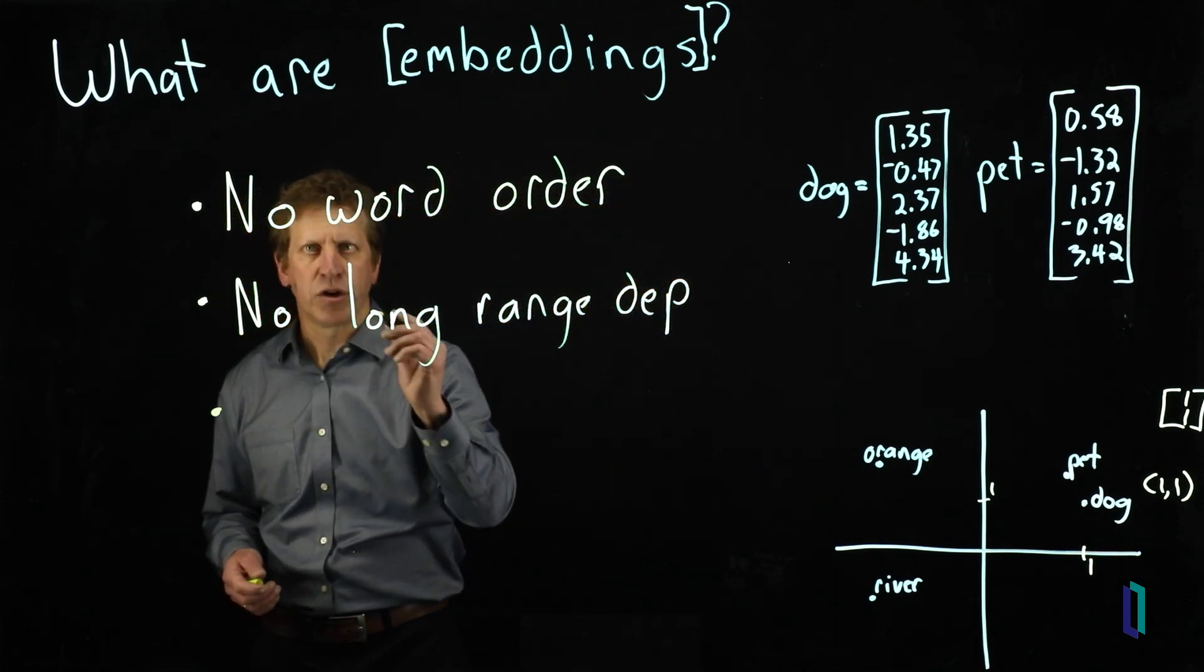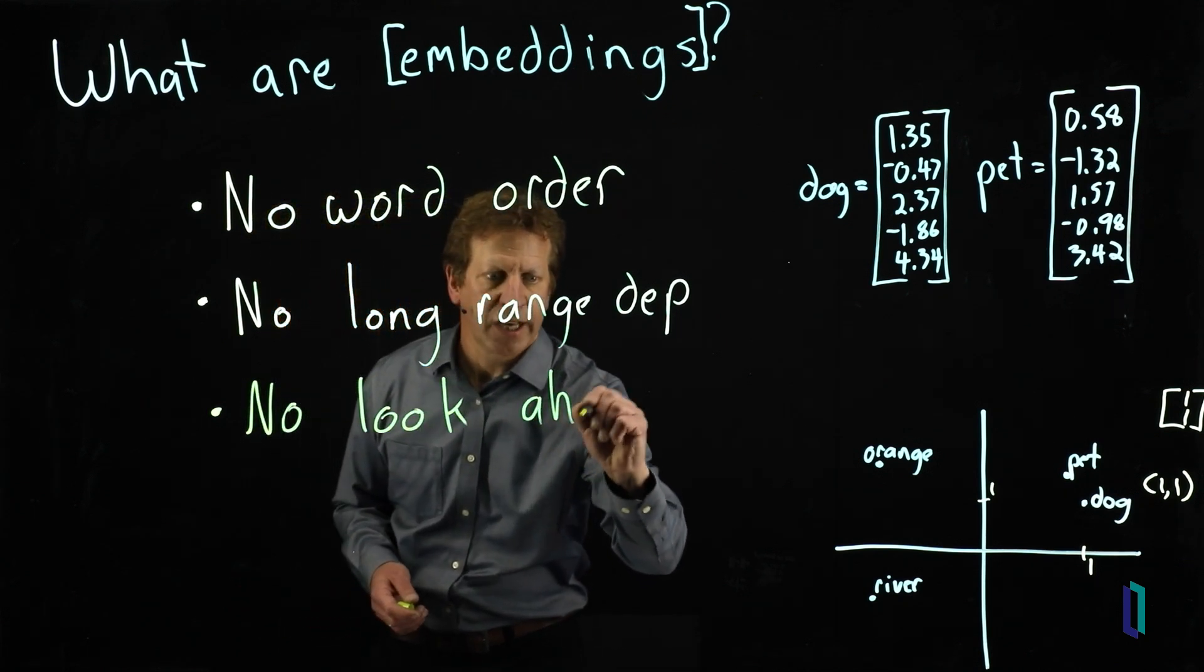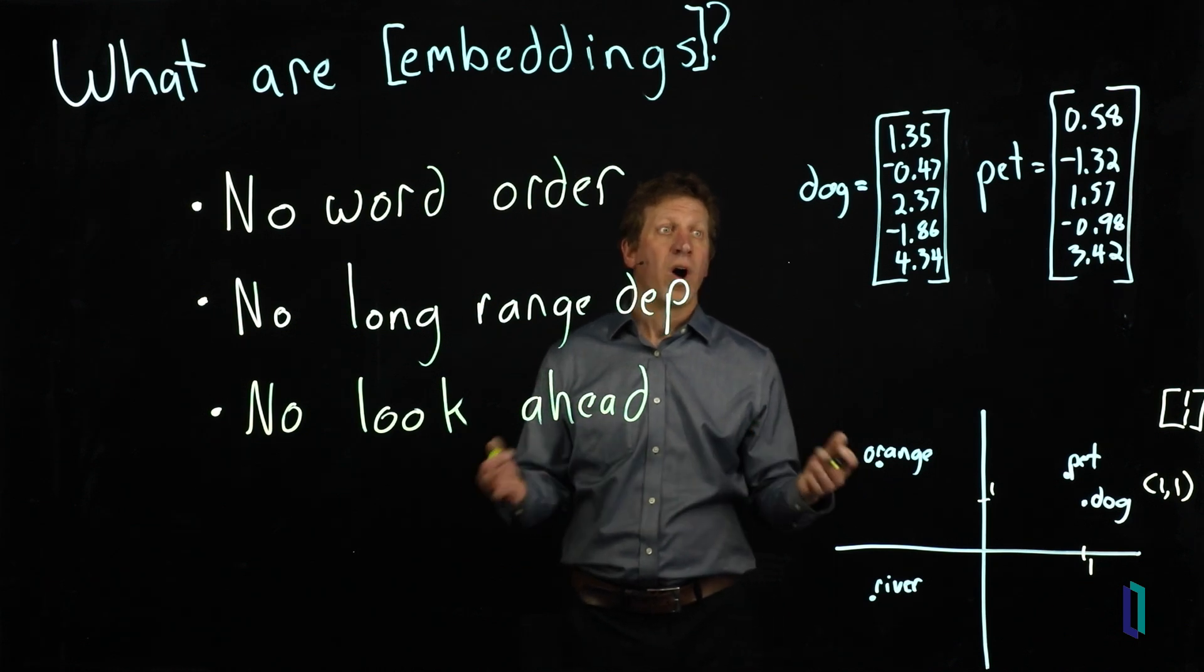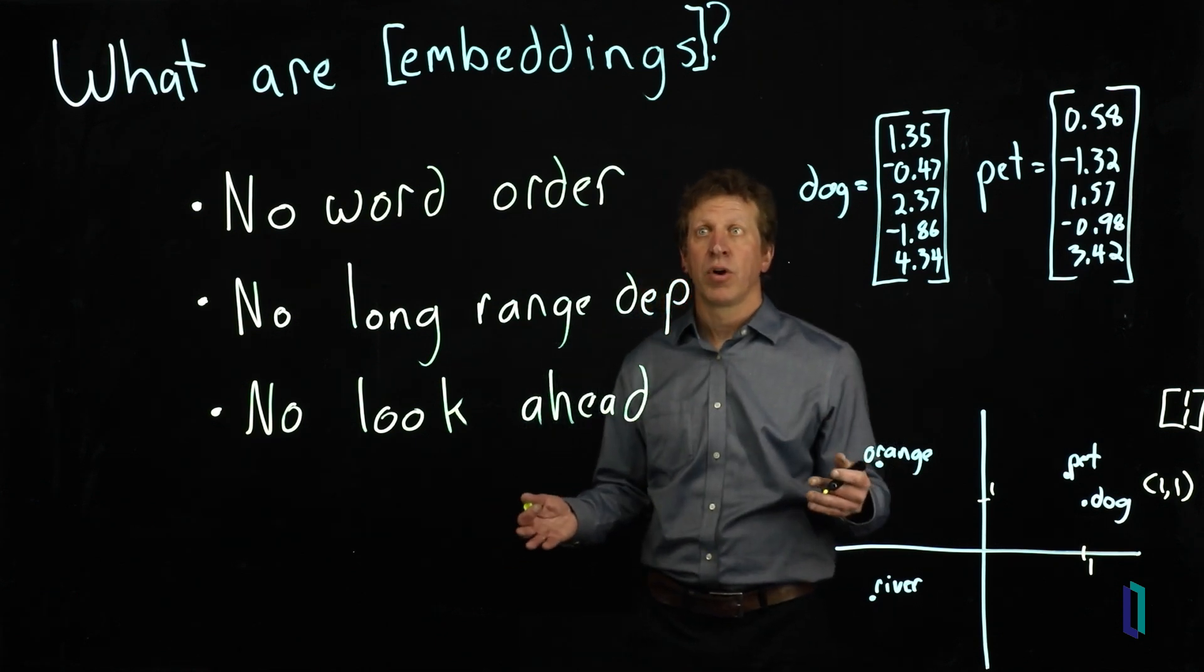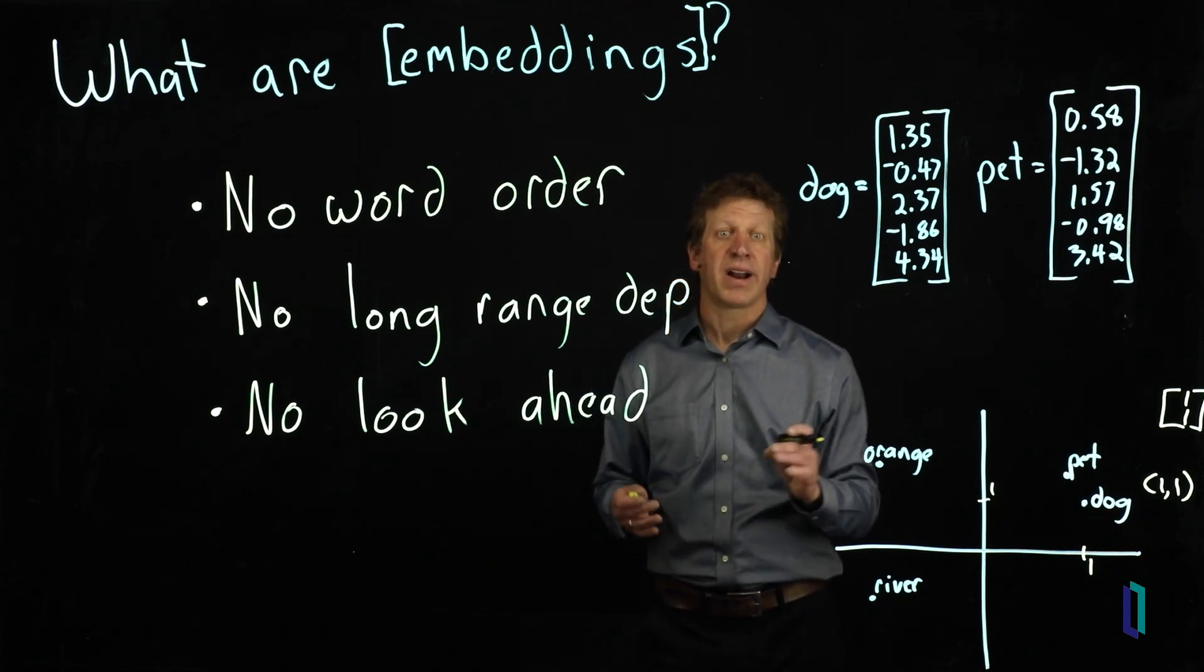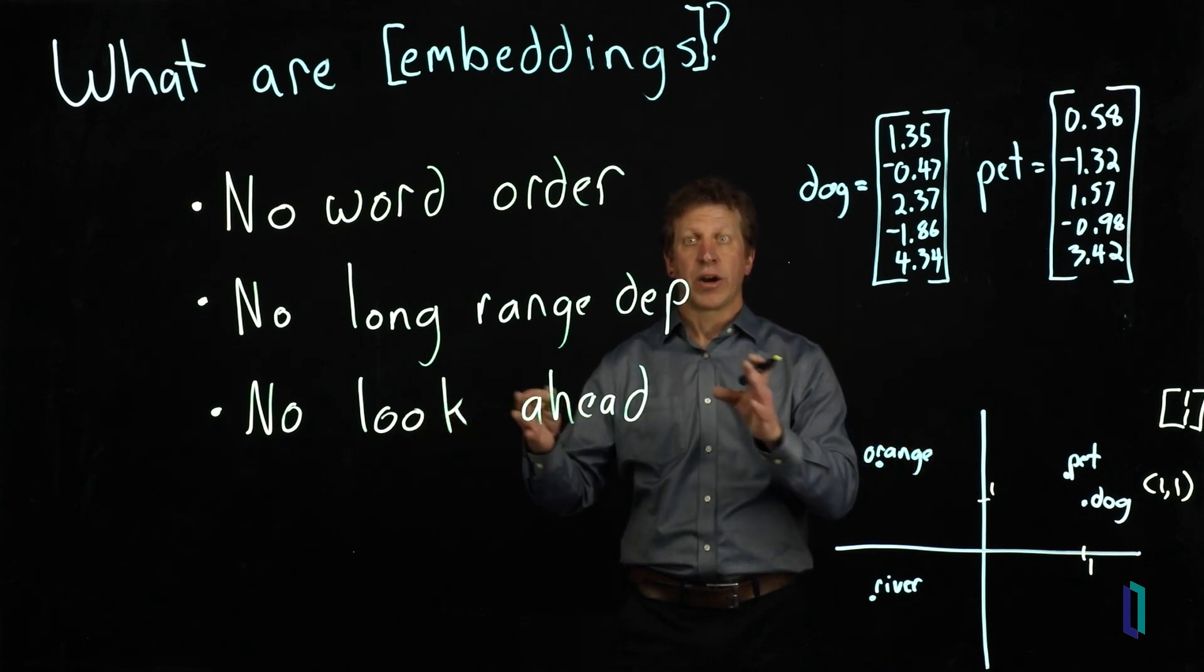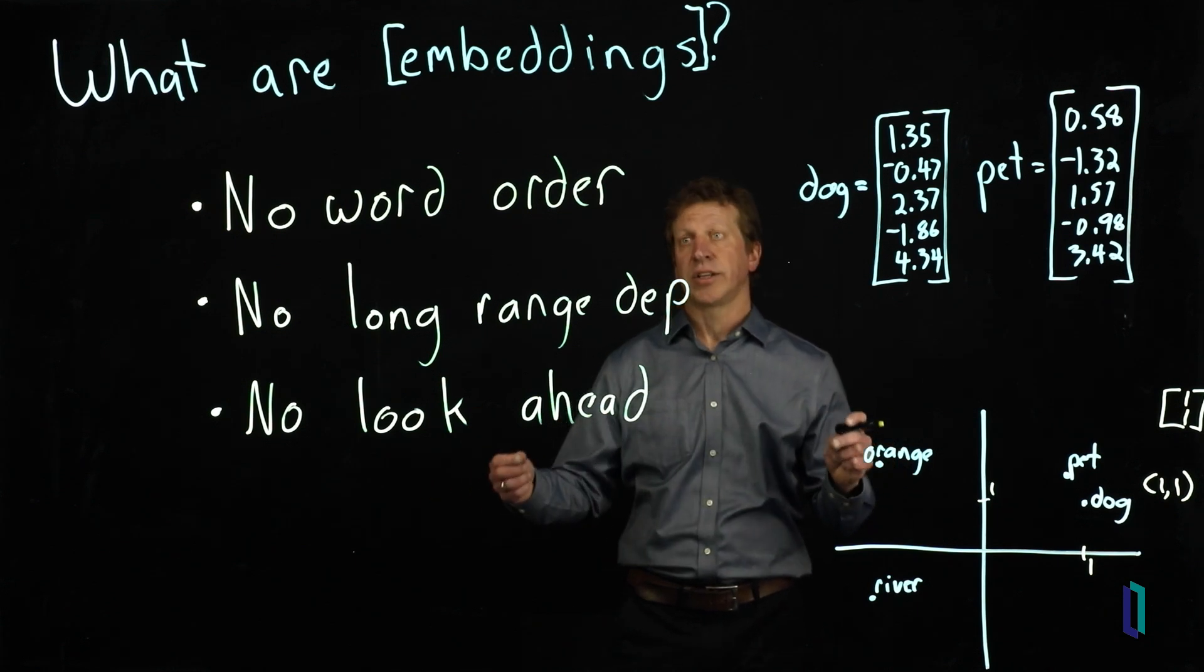Another thing, which is somewhat related to no word order, is no look ahead. This helps point out another deficiency with Word2Vec. Every word only has one vector. For a sentence like, I sat on the bank of the river, or I went to the bank to get some money. Bank in that, bank is going to have the same vector, but it obviously has very different meaning. If we use look ahead, which models would eventually do, we would then create a vector based on not only the words before it, but the words in context to that specific sentence.